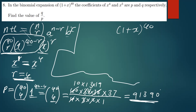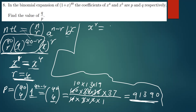Now let's find the coefficient of x^5 using the same procedure. We get x^r = x^5, which means r = 5 at the term that contains x^5.